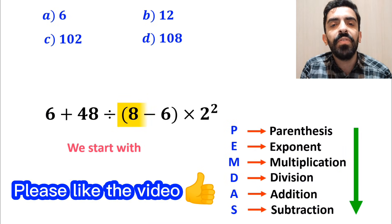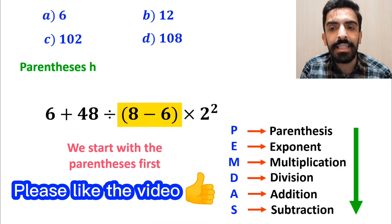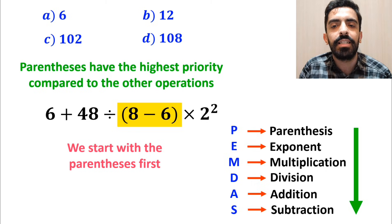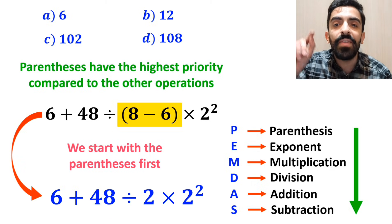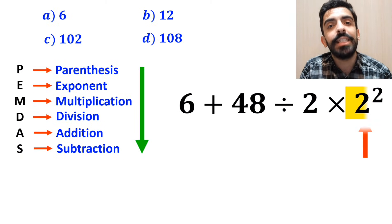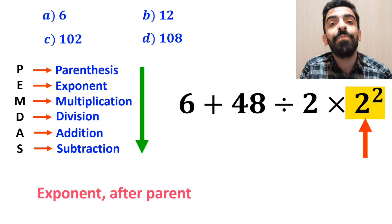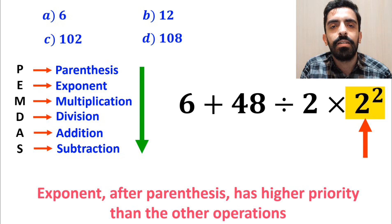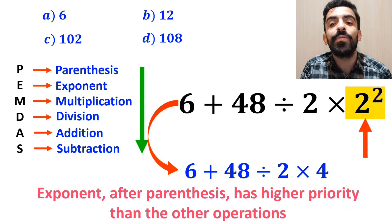We'll start with the parenthesis first because parenthesis have the highest priority compared to the other operations. So instead of this expression we can write 6 plus 48 divided by 2, then times 2 squared. In the next step we go to the exponent, since exponents have higher priority than the remaining operations, giving us 6 plus 48 divided by 2, then times 4.